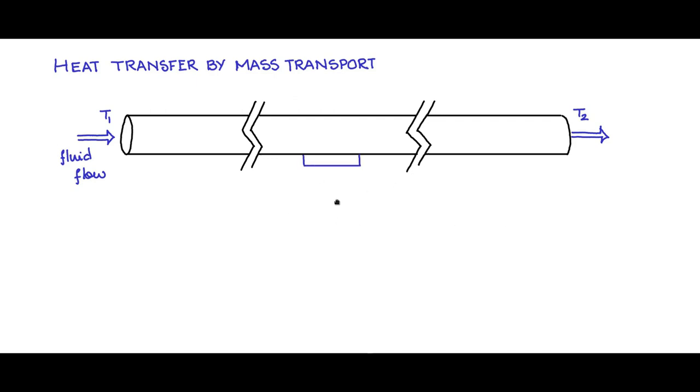In between we have a peltier junction, a peltier element, the terminals of the peltier element and that is connected to a body which is actually dissipating heat. And you want to remove that heat that this hot body is dissipating.